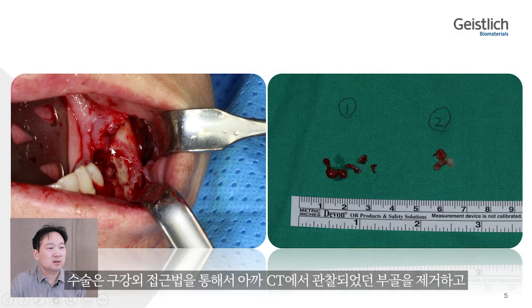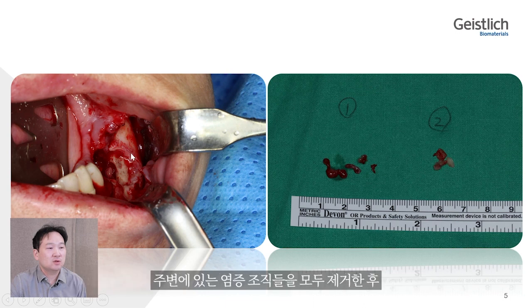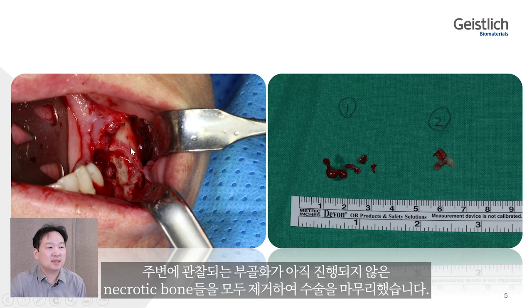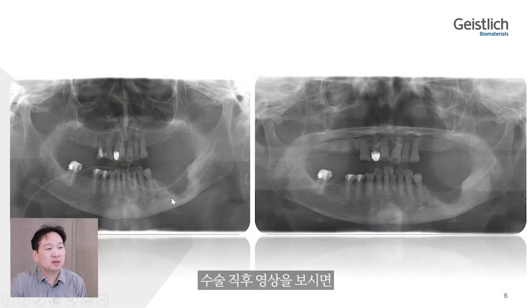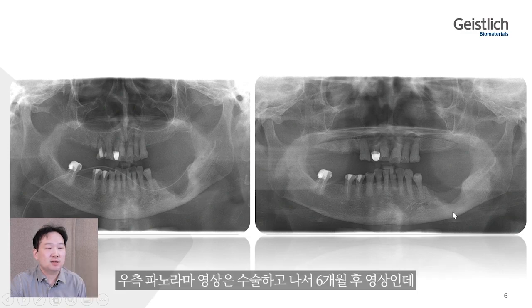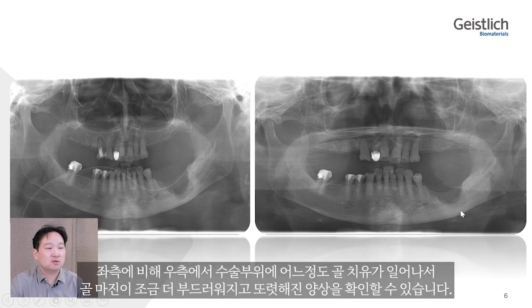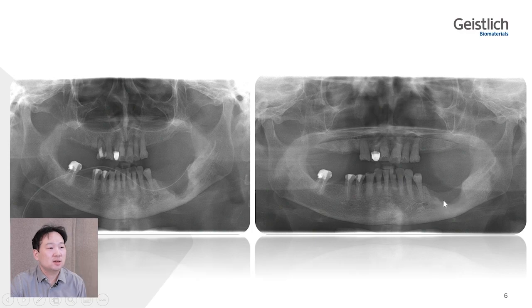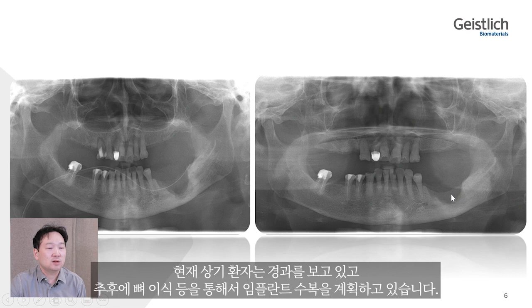Surgery was performed via an intraoral approach to remove the sequestrum observed on CT, and inside the area of the hemorrhoid bodies, outside the lesion, the ultrasound of the pulpal tube was cleared. Finally, the surgery was completed with clearance of the bulgea's body region as secondary treatment.